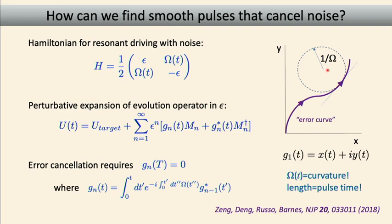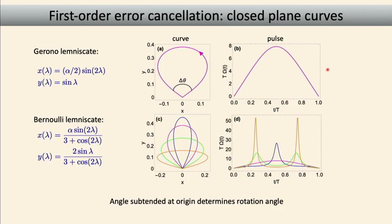So as soon as I draw a closed curve, I know: one, it's guaranteed to cancel first order noise, and two, the time it takes is just the length of the curve I drew. This is the general solution. Any pulse that cancels noise to leading order corresponds to a closed curve. For this particular Hamiltonian, it's a curve in two dimensions. A nice way to get analytical expressions for closed curves is to go back to 19th century mathematicians — they all had their favorite figure-eight shapes called lemniscates.